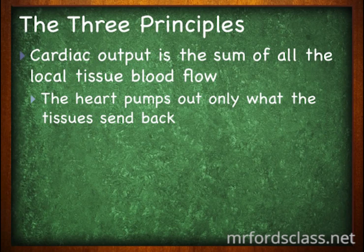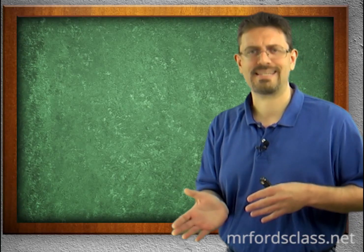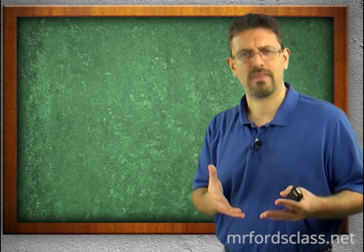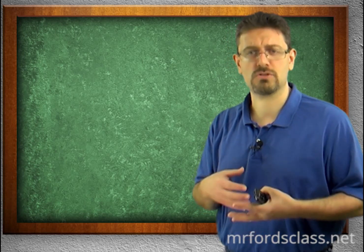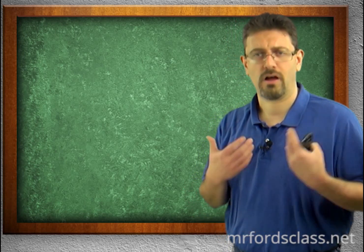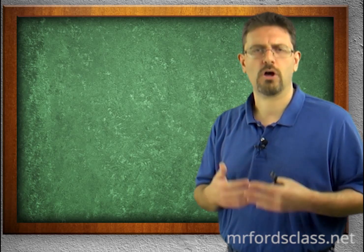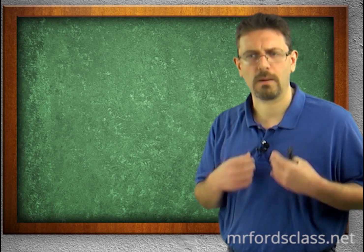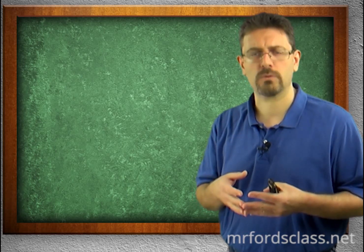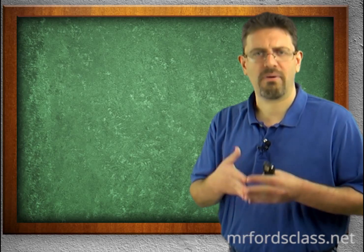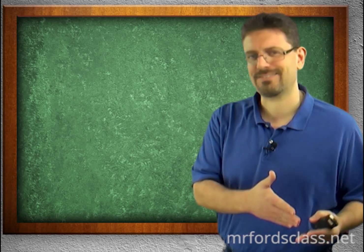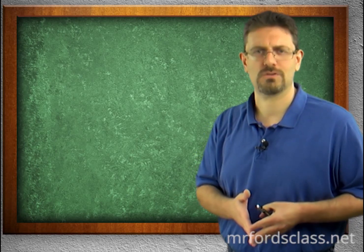Two: cardiac output is a sum of all the local tissue's blood flow. The heart will only pump out what the tissues send back. If the tissues are using the blood, the heart needs that blood back to push it out. So cardiac output — how much blood the heart pushes out — is dictated by how much blood is sent back to the heart by the tissues.